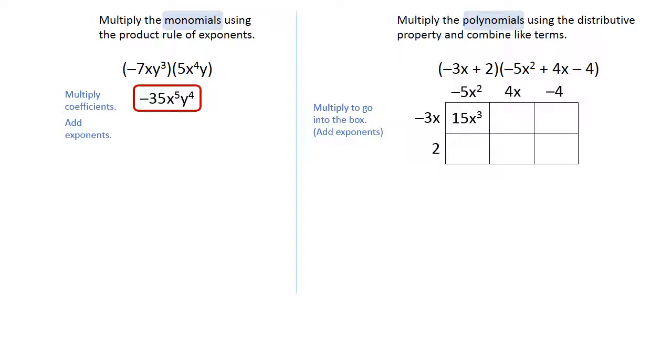In the second box, we're going to do the negative 3x and the 4x, and negative 3 times positive 4 is negative 12, and then adding those two x's is going to give us x squared.